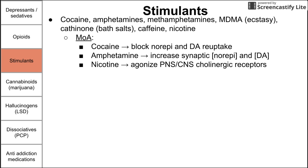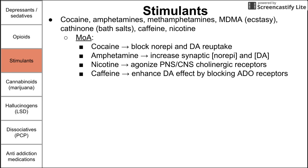Nicotine agonizes the cholinergic receptors in the peripheral and central nervous system — specifically the nicotinic cholinergic receptor, hence nicotine and nicotinic receptor. Caffeine enhances the effects of dopamine by blocking adenosine receptors, so it doesn't directly affect dopamine — it blocks adenosine receptors, which in turn enhances dopamine's effect.